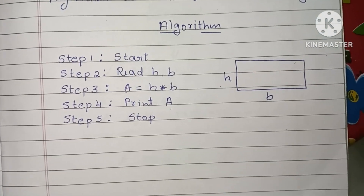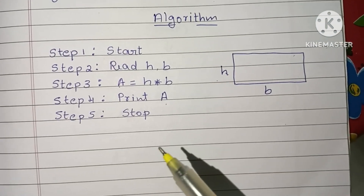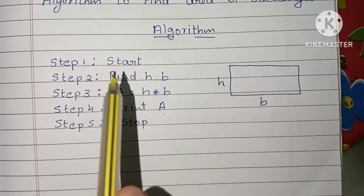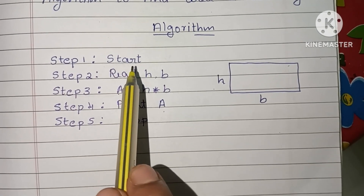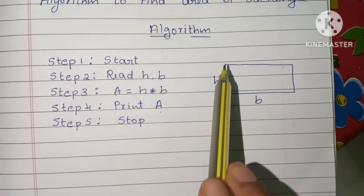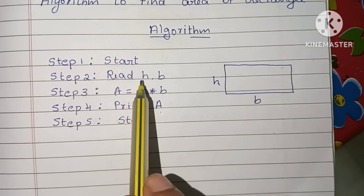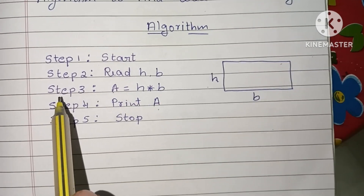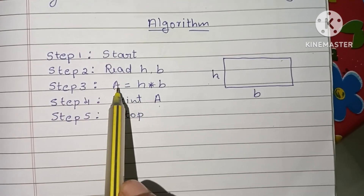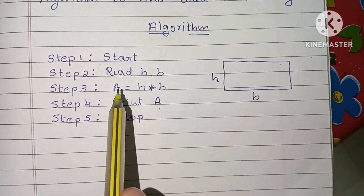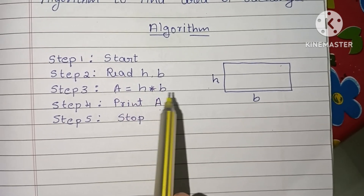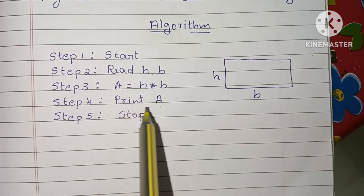To summarize, this is the algorithm to find the area of a rectangle. Step 1: start with a start statement. Step 2: read height and base, that is h and b. Step 3: calculate the area using the formula A = h × b.